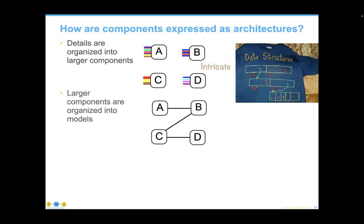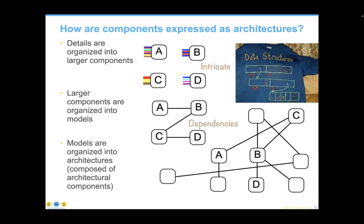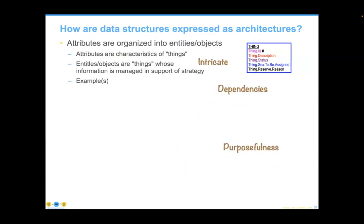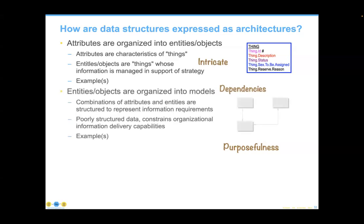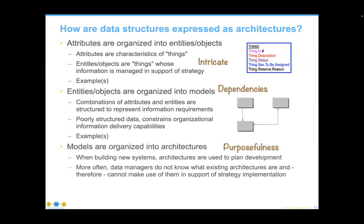We tend to organize things in a reverse decomposition method — we take details and organize them into larger components, which leads to intricacies in construction. These larger components are organized into models, leading to dependencies. For example, from a reference, master data, and transaction data perspective, we need a master record for a charge card number if we're going to charge things to that card. And those models are organized into architectures, but all should be guided by some official, overt purposefulness — faster, better, cheaper, or less risk.